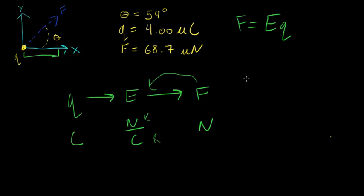all we have to do for this problem is take 68.7 - I'm just going to do the μ, they're going to cancel out anyway - over 4 μC. That's going to equal 17.175 newtons per coulomb.